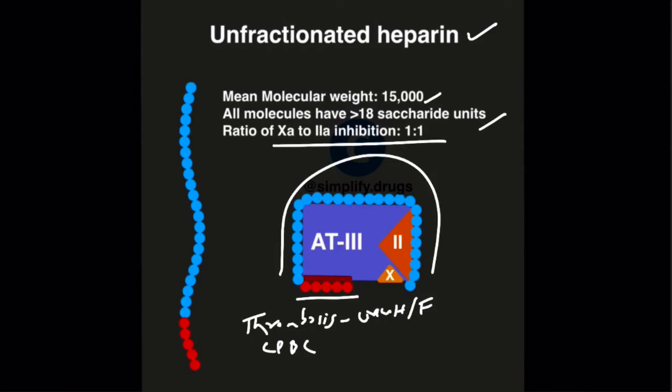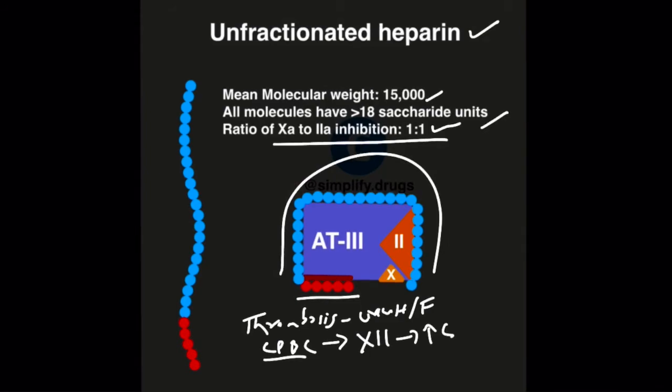In cardiopulmonary bypass circuits, a large amount of factor 12 is activated by the external systems. This in turn increases the activation of coagulation cascade. A more complete inhibition of coagulation by unfractionated heparin is preferred during this procedure.